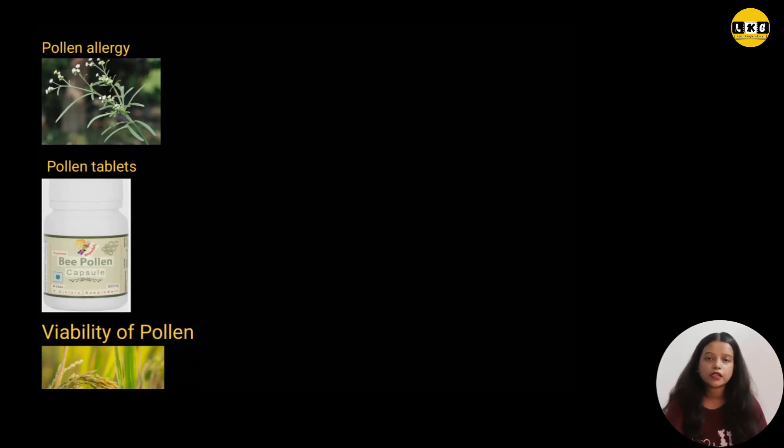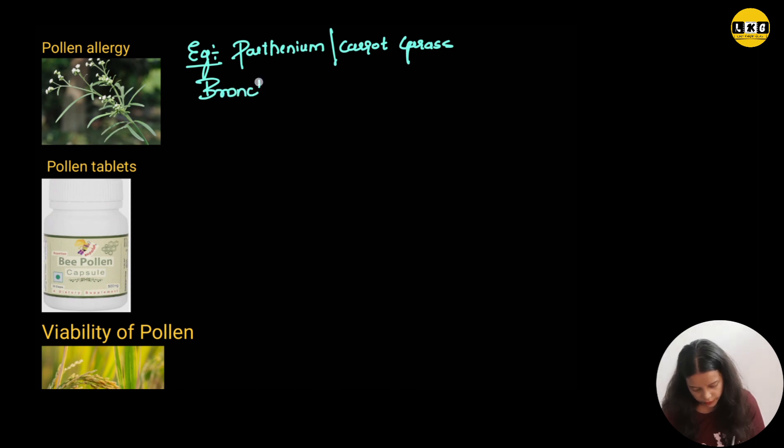So, now let's discuss about some of the facts of the pollen grains. Pollen grains not only have advantages but there is disadvantage of the pollen grain. Most of the pollen grains causes pollen allergy. Example of the plant which causes pollen allergy is parthenium or it is also known as carrot grass. Over exposure of the allergic pollen grain causes respiratory disorder like bronchitis and asthma.